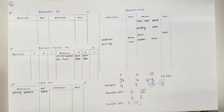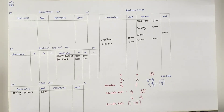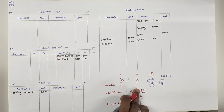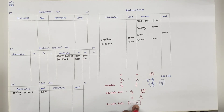They admitted C as a new partner. First: A sacrifice one by twelfth share and B sacrifice one upon sixth share from their profit share in favor of C. यानि कि C को A one by twelve दे रहा है, B one by six दे रहा है. Sacrifice ratio 1:2 हमने already find कर दिया है.